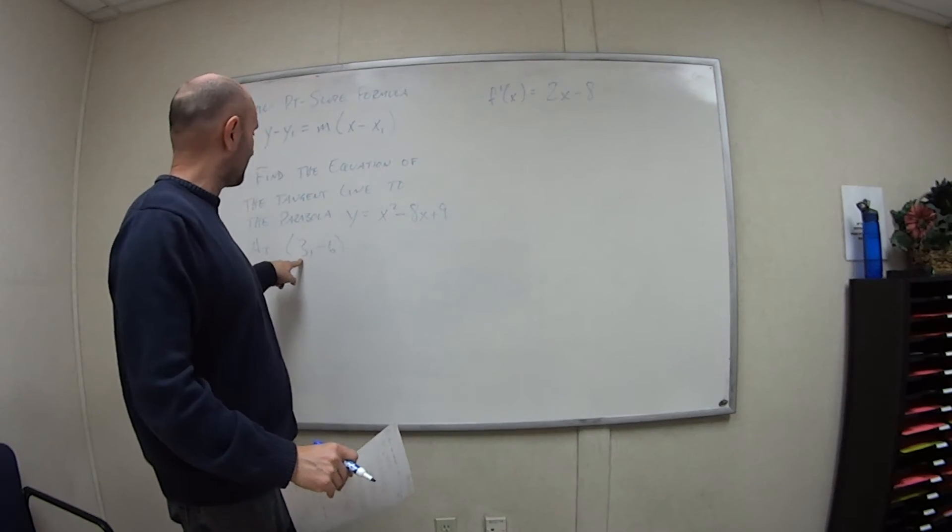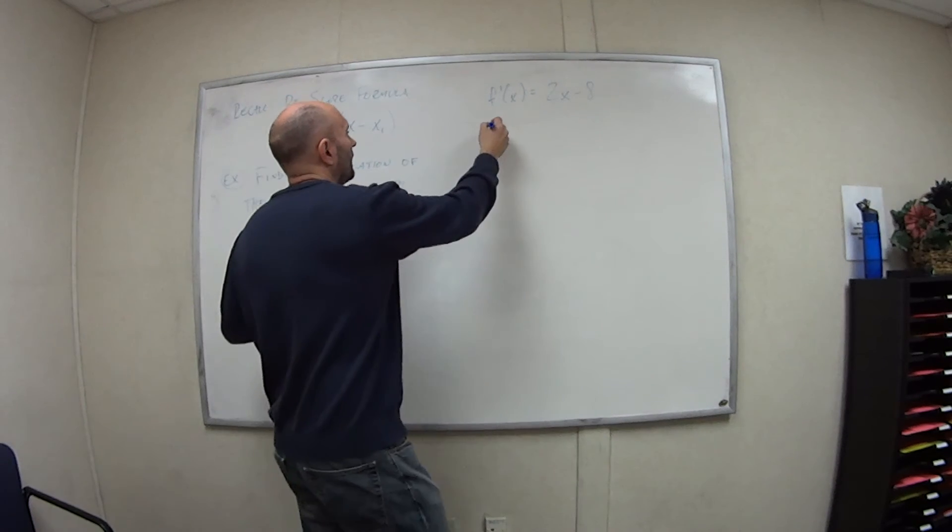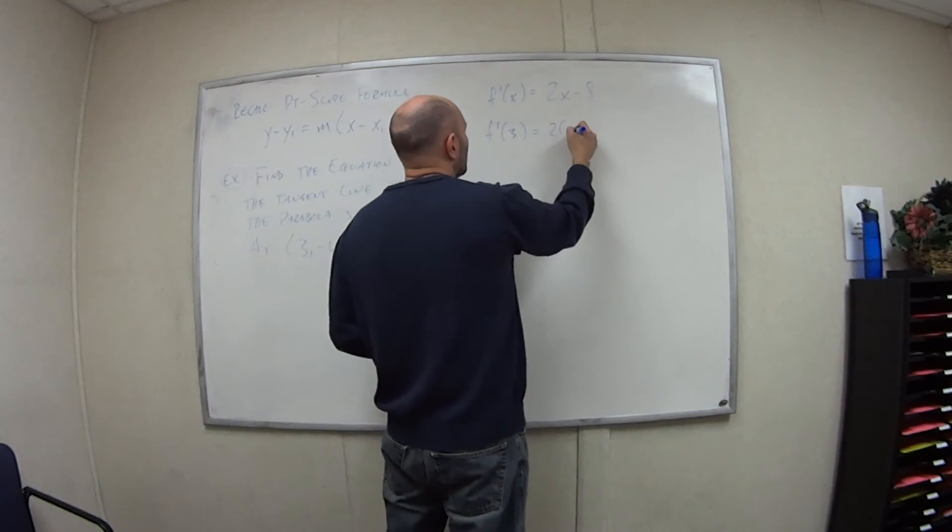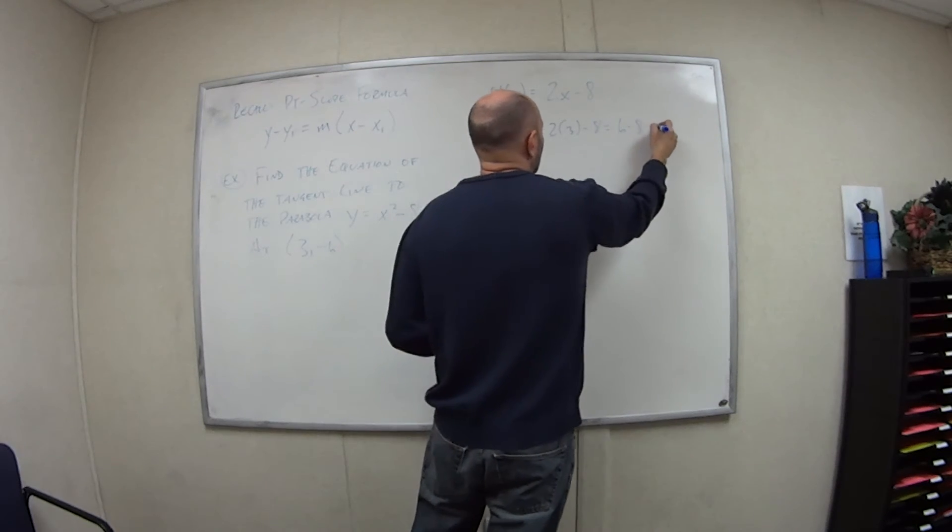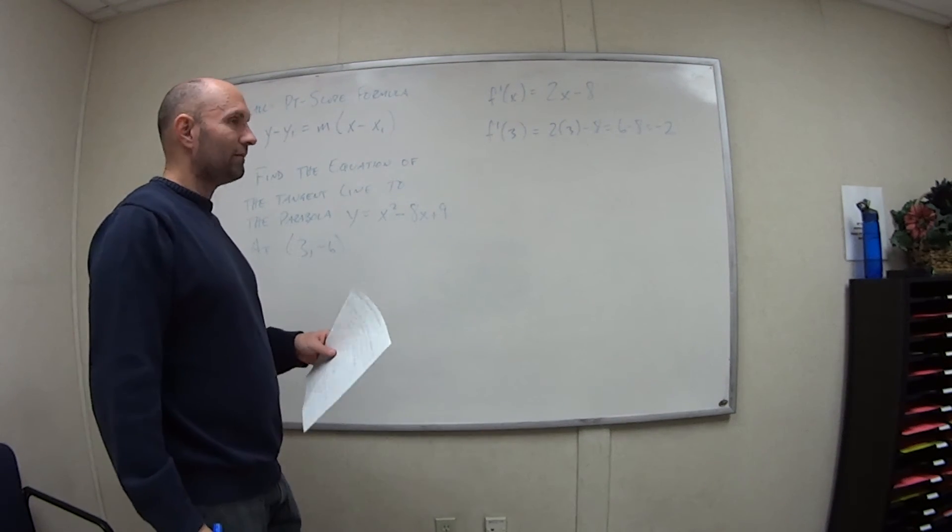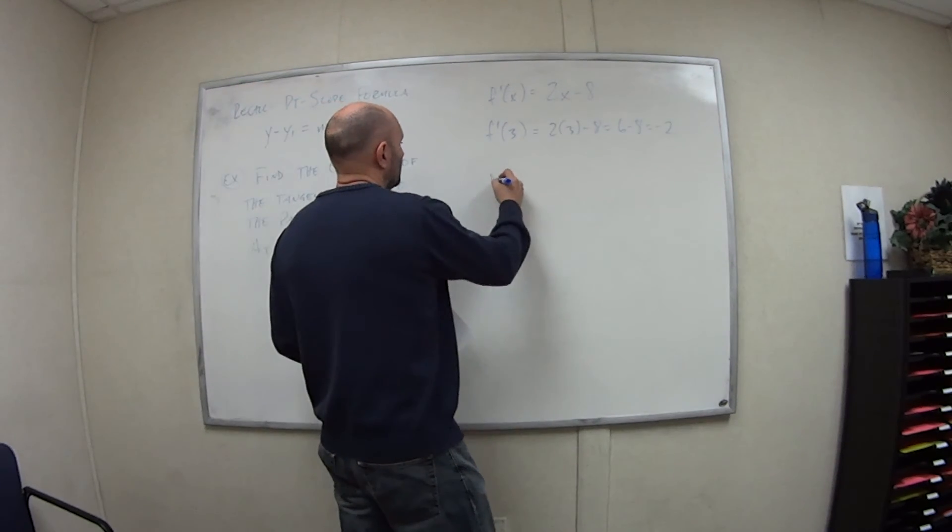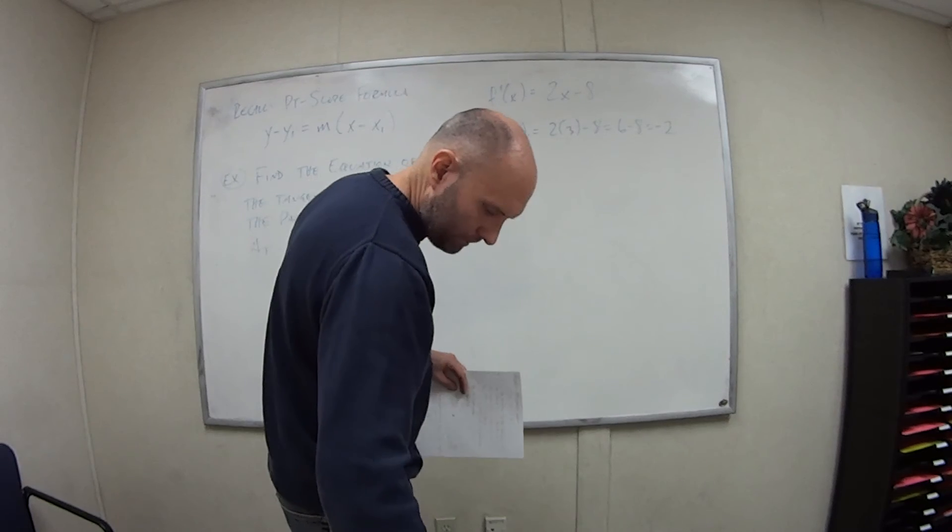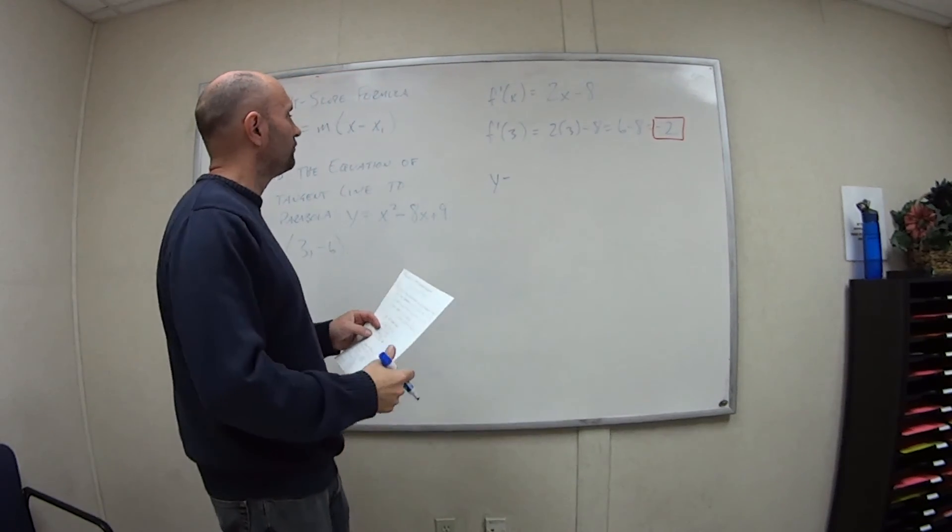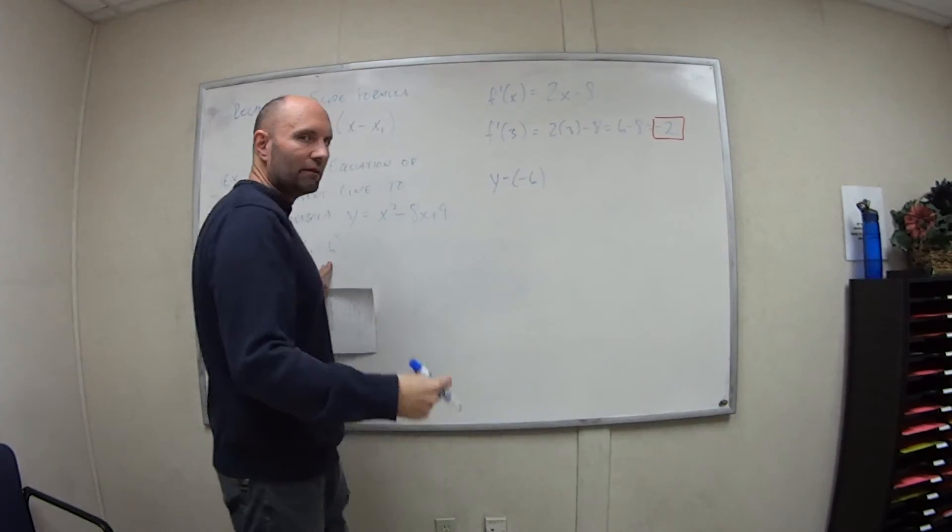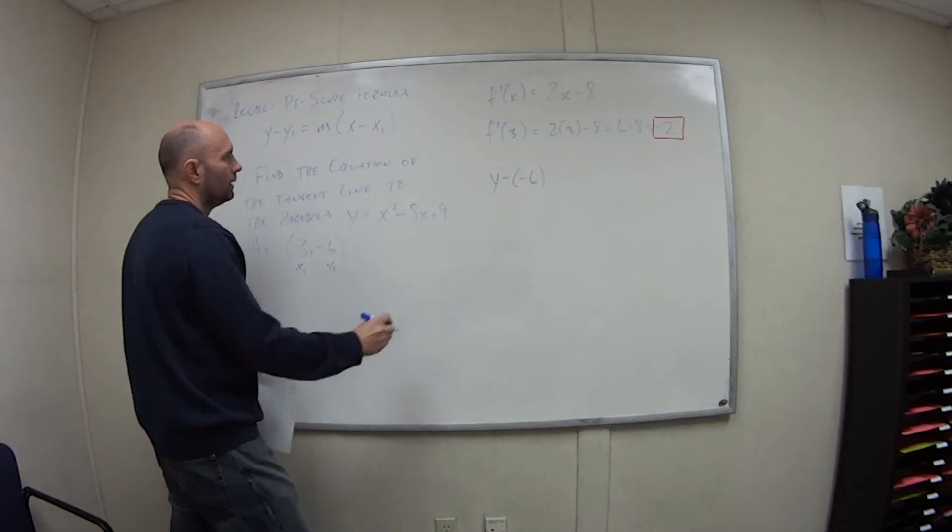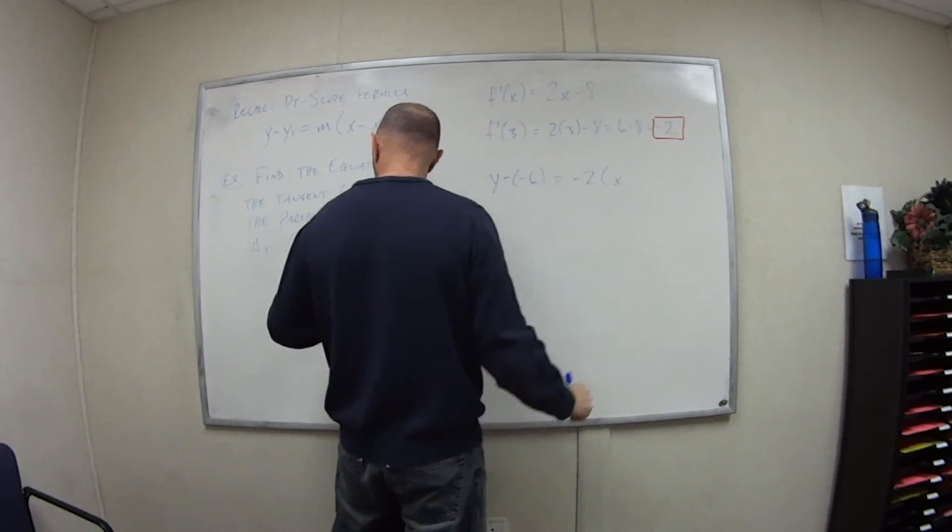So we're at (3, -6). So that means my slope at this point, I want to plug in 3 for x. So I want f prime of 3. So if I plug that in, I get 2 times 3 minus 8, which is 6 minus 8, which is negative 2. So that's my slope at that point. Now I need the equation. I'm going to use the point slope formula. So I have what? The slope at the point (3, -6) is negative 2. So now I'll plug these guys in. And again, because of all the negative signs, be careful with your algebra. So y minus y_1 is equal to m, negative 2, times x minus 3.